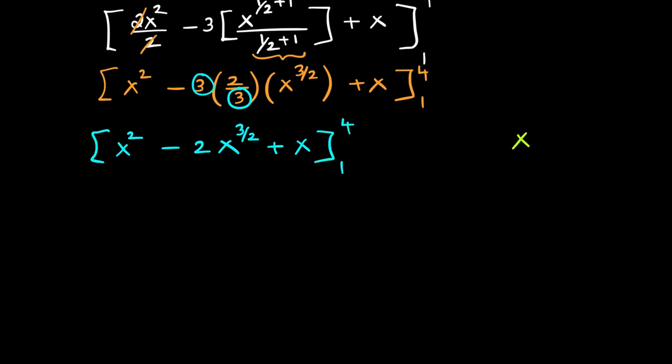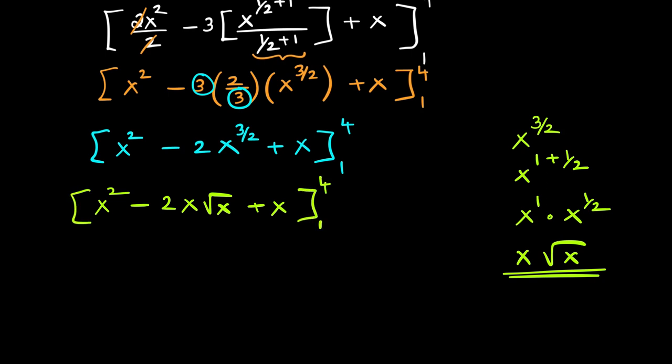Also remember the rule x raised to power of 3 over 2 can be written as x raised to power of 1 plus half. That is x raised to power of 1 into x raised to power of half which is x root x. So that is also a better way of writing it out. So let me write one more step. x square minus 2 x root x plus x between the limits 1 and 4. So now we are in a comfortable position of plugging in the limits.